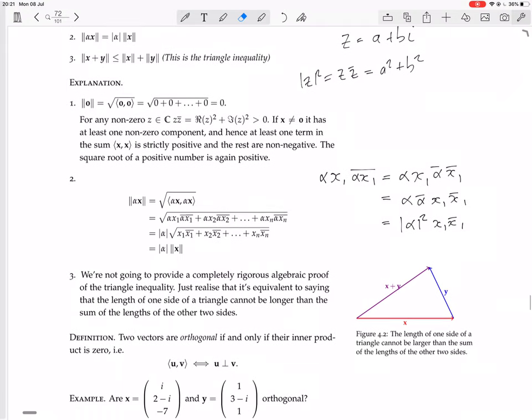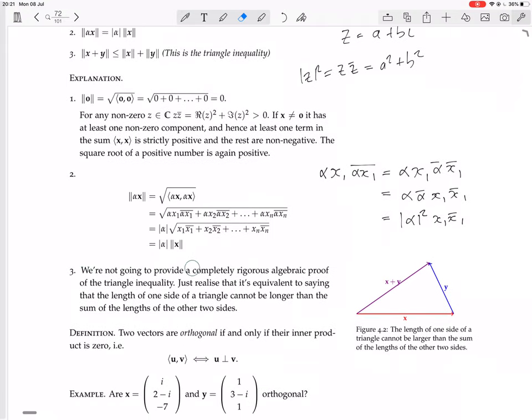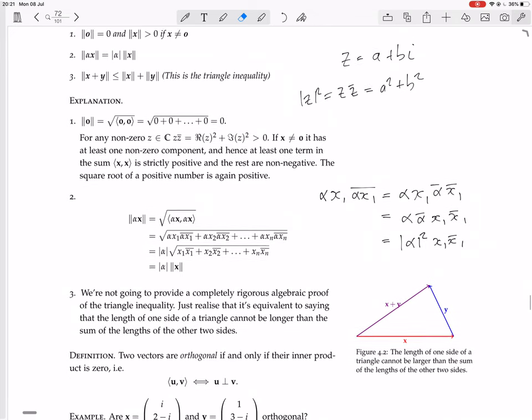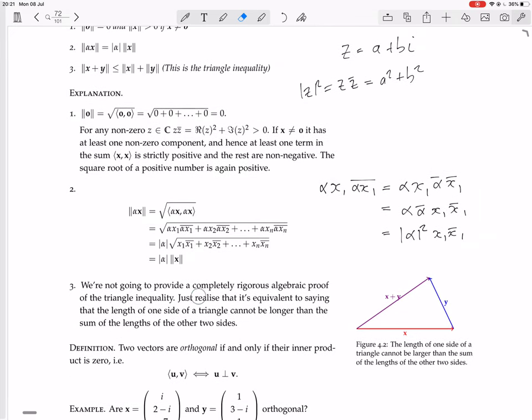So we have proof that equals that. And for three, we're not going to provide a completely rigorous proof of the triangle inequality. Just realize that it's equivalent to saying that the length of one side of a triangle cannot be longer than the sum of the lengths of the other two sides. Basically, it's equivalent to that if you're in R3, right?